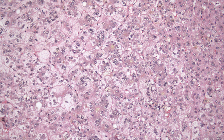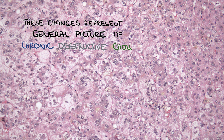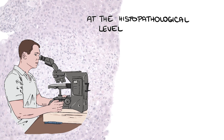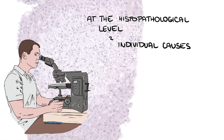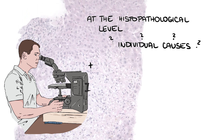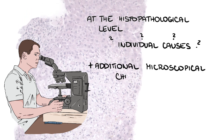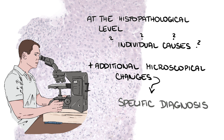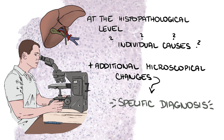It is important to stress that these changes represent a general picture of chronic obstructive cholestasis, but they are not specific for a particular disease. At the histopathological level, we cannot fully differentiate individual causes of bile blockage. However, in some diseases we can also see additional supportive microscopical changes which can lead us to a specific diagnosis. This is especially true for diseases that affect not only the extrahepatic, but also the intrahepatic biliary tree, such as primary biliary cholangitis.